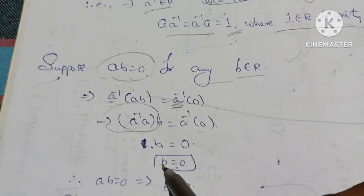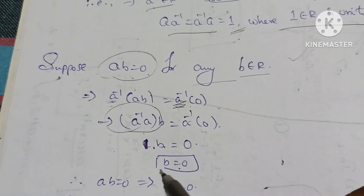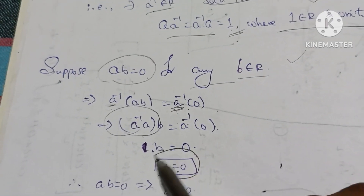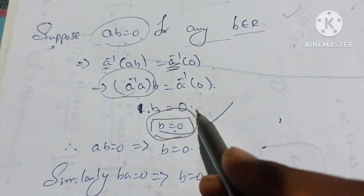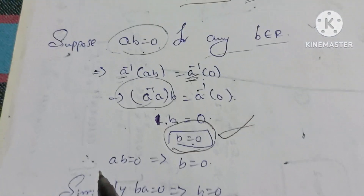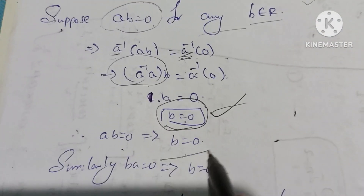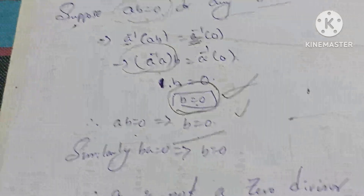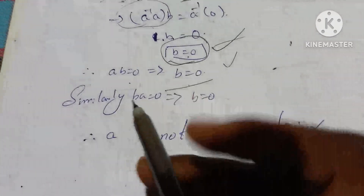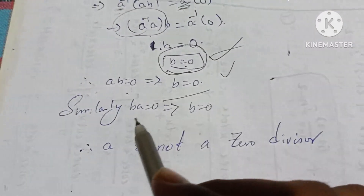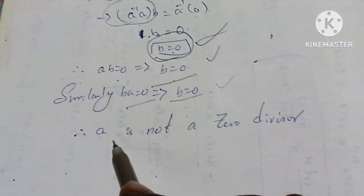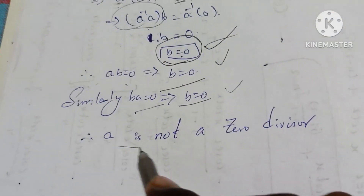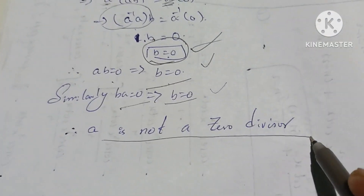1 into b gives b is equal to 0. Therefore, if a·b equals 0, then b equals 0. Similarly, b equals 0 in the other case. Therefore, a is not a zero divisor.